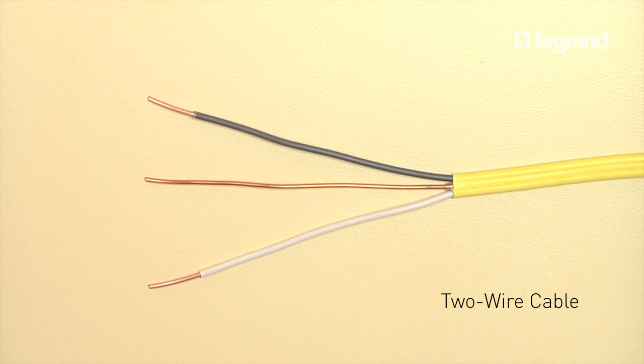Here is a 2-wire cable, where black is hot, white is neutral, and bare copper or green insulated is ground.